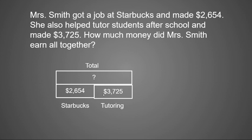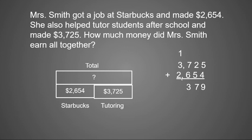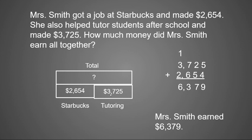So we're going to add the two groups together to get our total. Starting in the ones place, 5 plus 4 is 9. 2 plus 5 is 7. 7 plus 6 is 13, so we put our 3 and carry our 1. And 3 plus 2 is 5, plus 1 more is 6. So Mrs. Smith has earned a total of $6,379. If we have our two parts and we're looking for our total, we add those together.